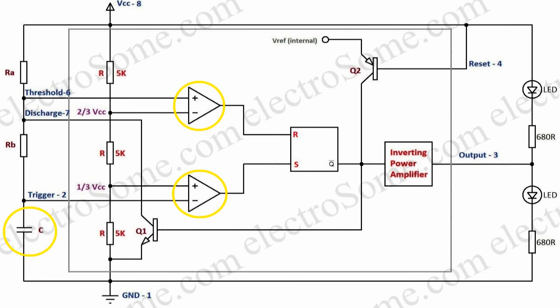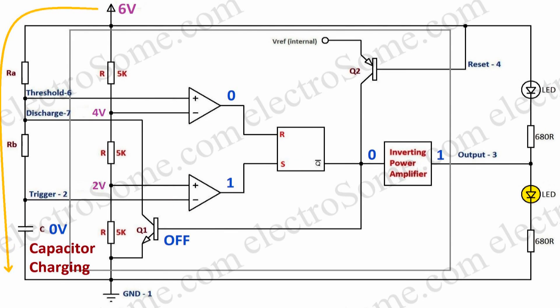Now we can go through the detailed working of the 555 astable multivibrator. You can see that the capacitor voltage is compared by both comparators. The output of the lower comparator will be 1 when the capacitor voltage is less than 2 volts, and the output of the upper comparator will be 1 when the capacitor voltage is higher than 4 volts.